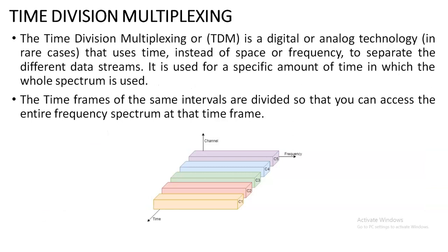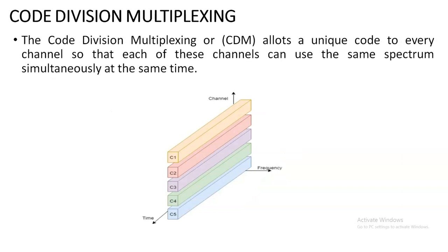The next type is time division multiplexing. Here, if there are five different users, each user is allocated their own time slot to send their signal through the medium. User one is allocated time one, user two is allocated time two, and so on — each user gets their own time space. At that particular allocated time, only that user can use the medium; the others cannot. This is time division multiplexing.